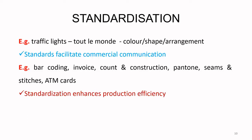Standardization enhances production efficiency. When you're producing only one kind of thing to one standard and you do it again and again, by virtue of repetition and familiarity you produce much faster and more efficiently. This leads to economies of scale in production — people achieving that standard again and again increase their speed per unit over time.